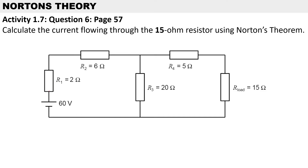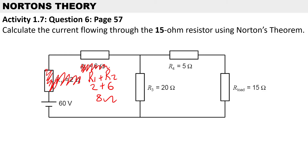If you take a look at this electric circuit, you'll see that R1 and R2 are actually in series. So if you want to simplify those two resistors into one resistor, you can say R1 plus R2: 2 plus 6, which gives you 8 ohms. You can cancel out those values, and that single resistor becomes 8 ohms.